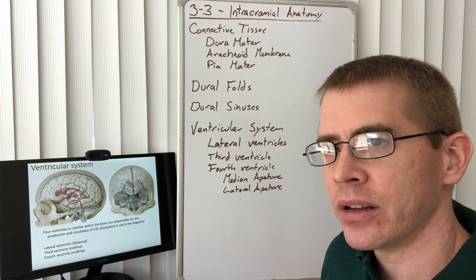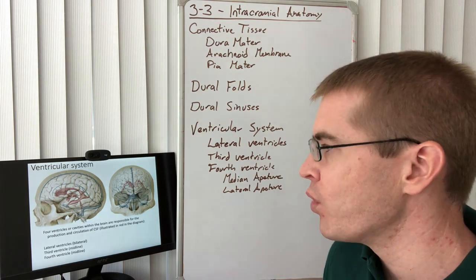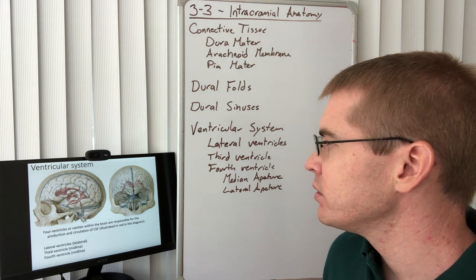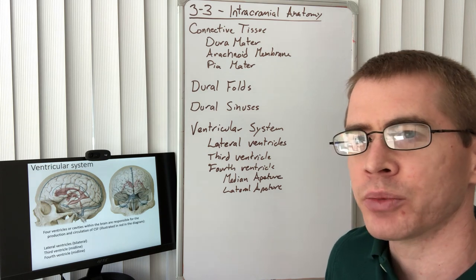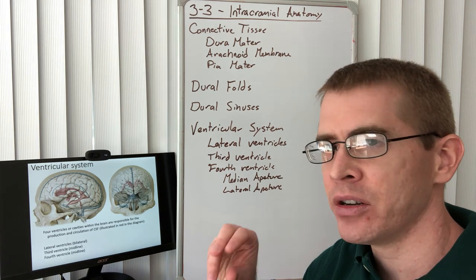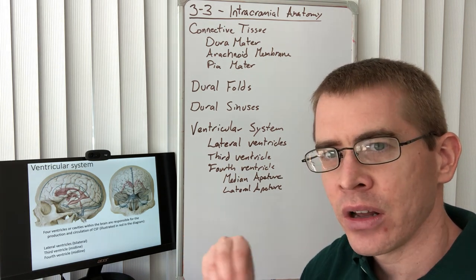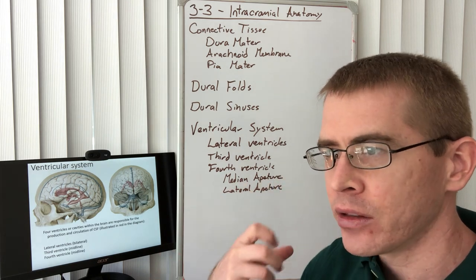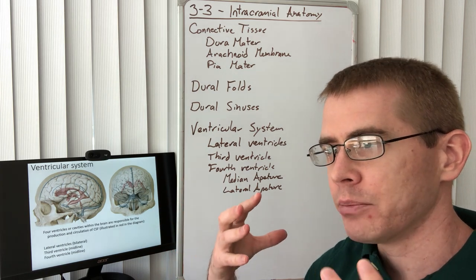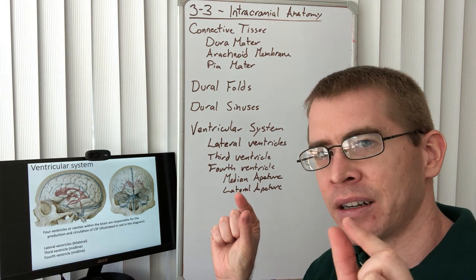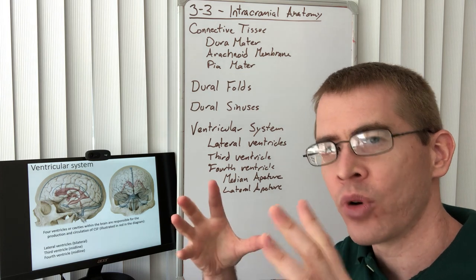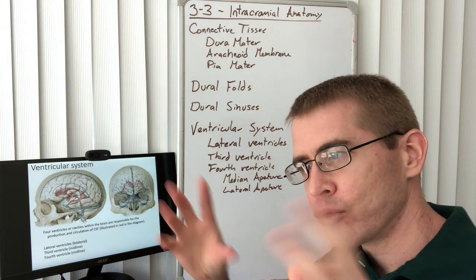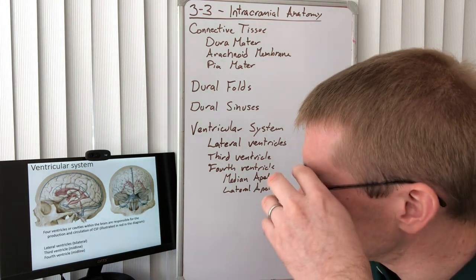Next we need to discuss the ventricular system. There are four ventricles within the brain: two lateral ventricles, a third, and a fourth. Cerebrospinal fluid, or CSF, is produced within these ventricles — primarily within the lateral ventricles — by specialized ependymal cells that secrete CSF to help clean and flush the brain and remove toxins. During sleep, neurons and glia actually shrink slightly to allow more extracellular space through which CSF flows and removes the toxins they have released.